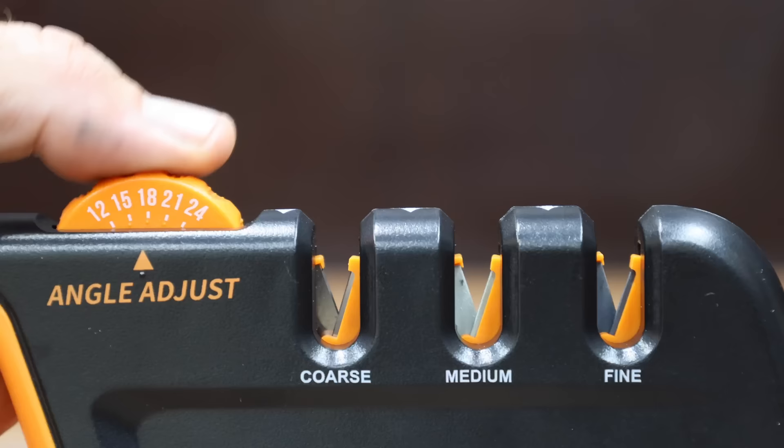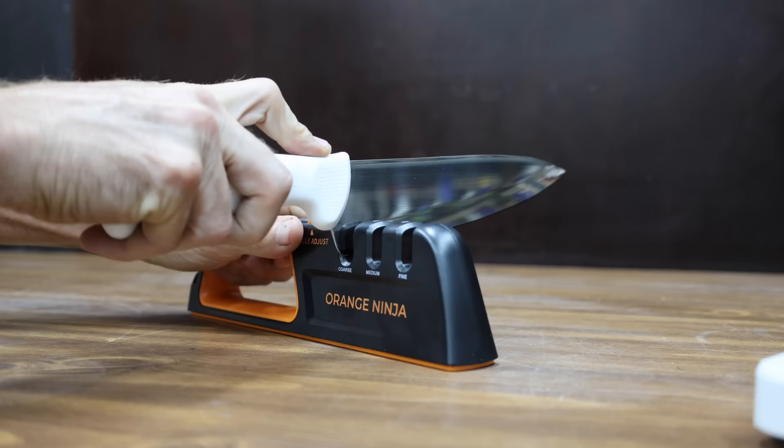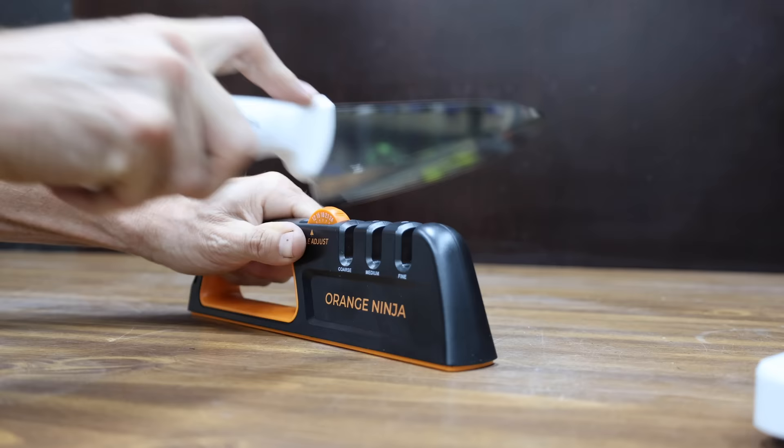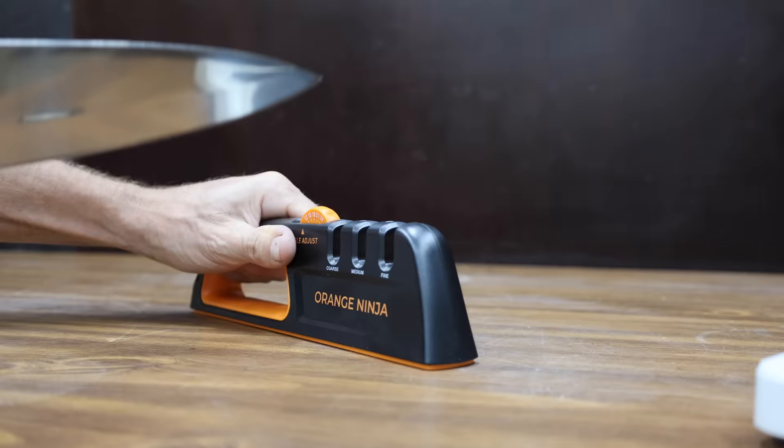Set the sharpening angle by rotating the angle adjustment knob and turning to the desired angle. I'm going to sharpen the knife to 18 degrees. Use gentle force pushing the blade down while pulling the knife back through the slot. Repeat this action five times for mildly dull blades or more for severely dull blades. After pulling the blade through coarse setting, run the blade on the medium setting three to five times or more if required. Finally, refine the edges by running the blade through the fine setting three to five times.